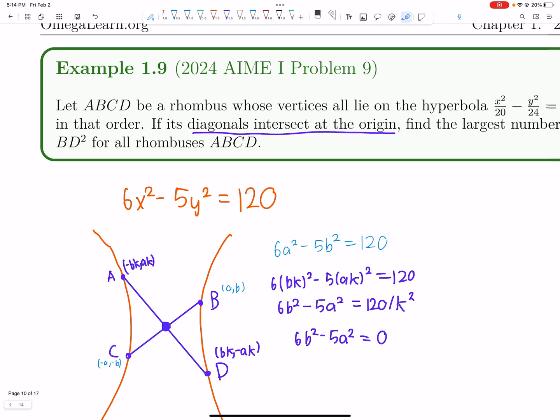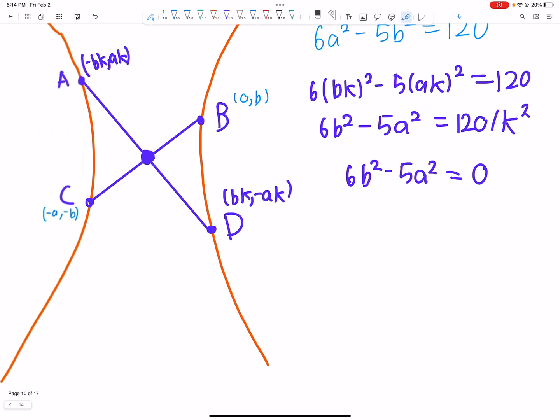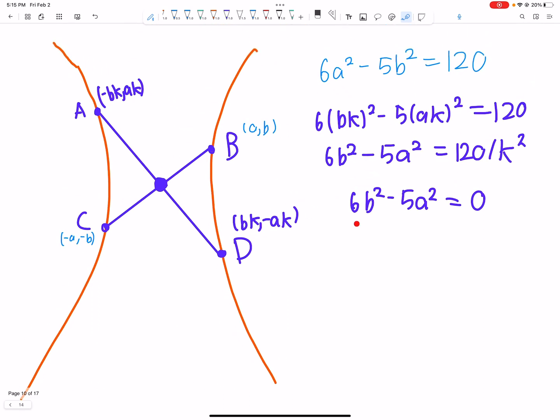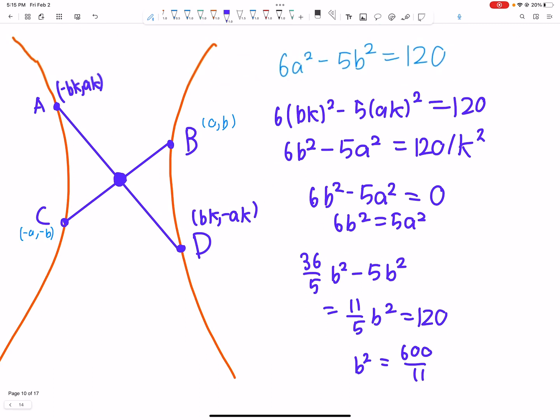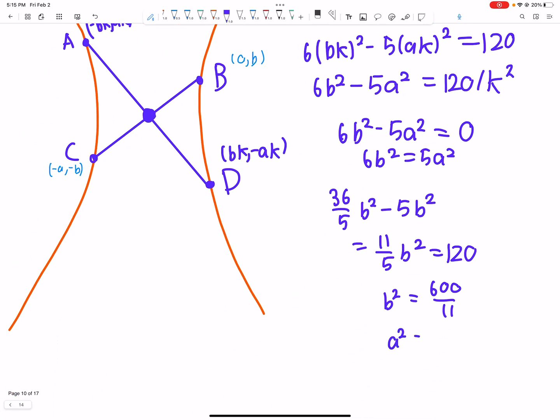Setting 6b² - 5a² = 0, we get 6b² = 5a². Therefore 6a² = 36/5·b², so 36/5·b² - 5b² = 11/5·b² = 120. This gives b² = 600/11 and a² = 720/11.